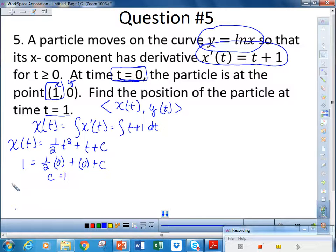Therefore, our position is given by the expression 1 half t squared plus t plus 1. And we want to know the position when the particle is at t equals 1. So I can find x of 1, which is 5 half or 2.5.